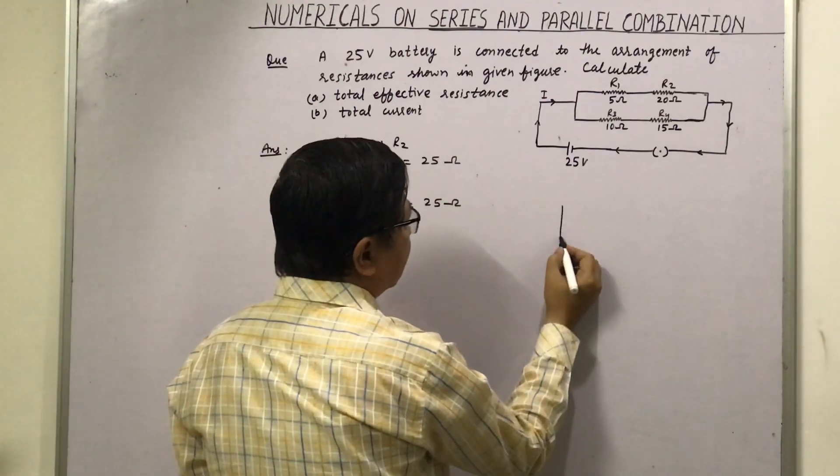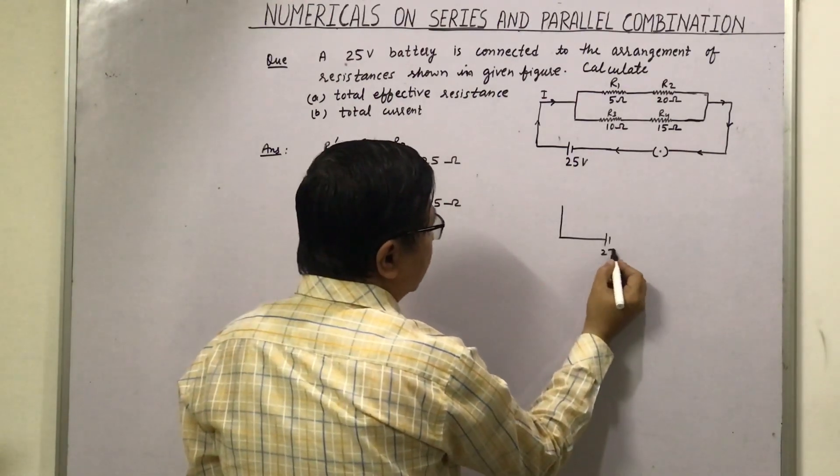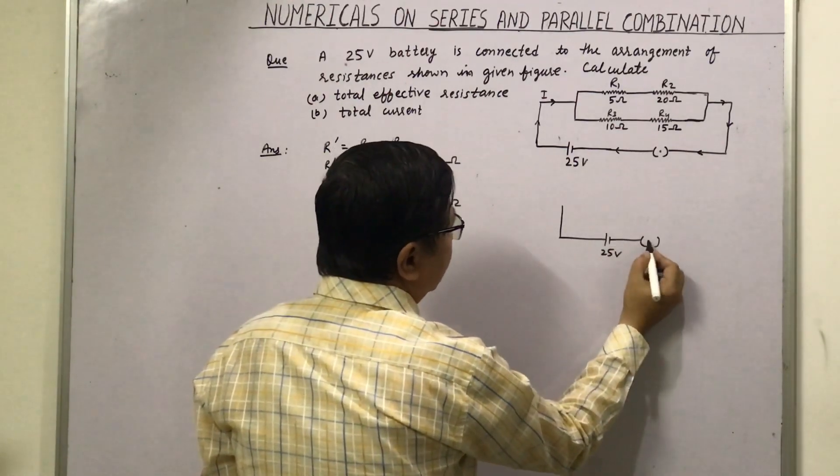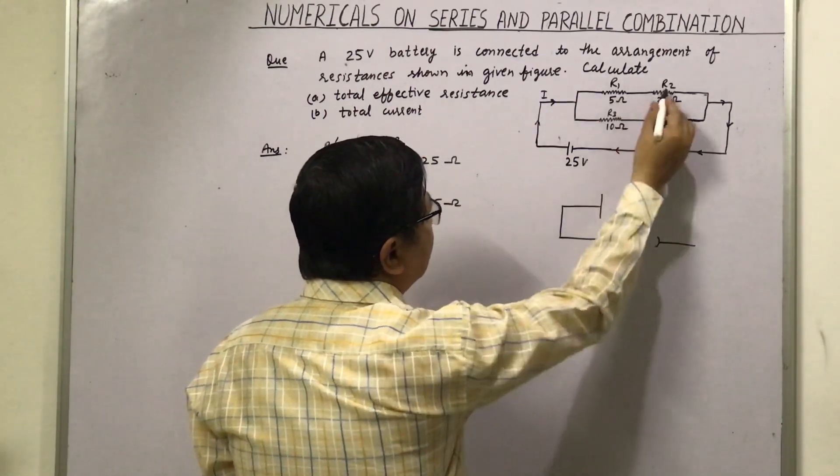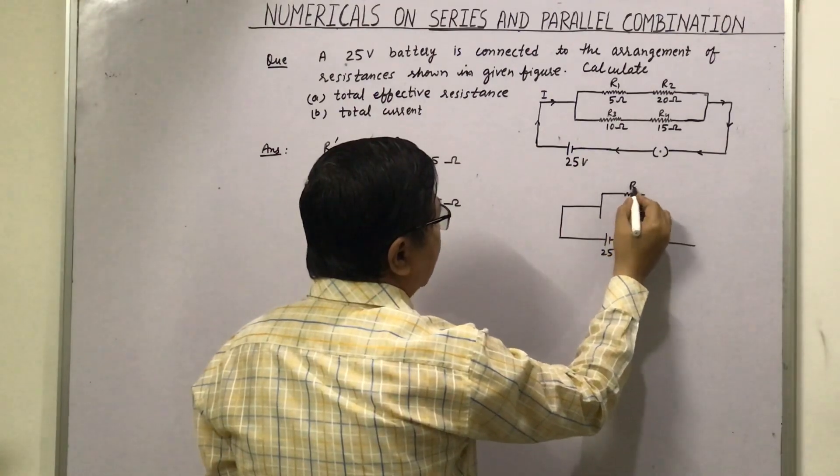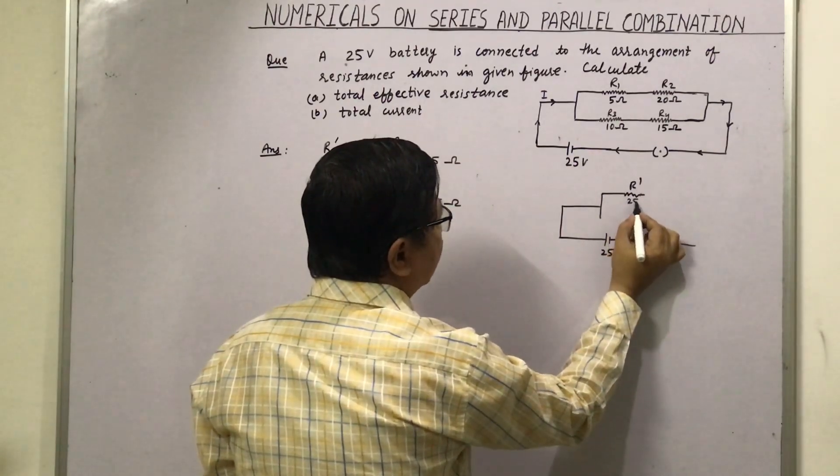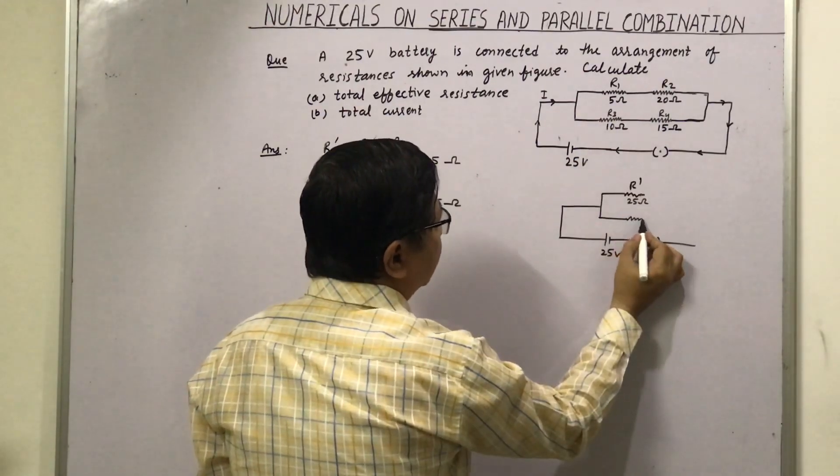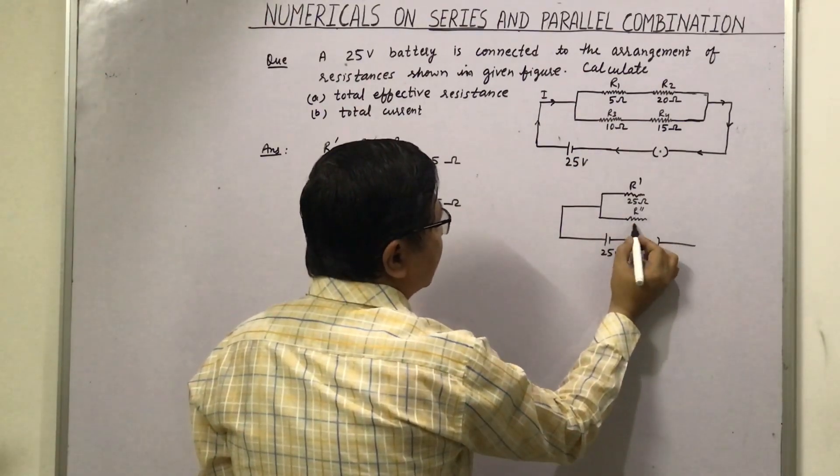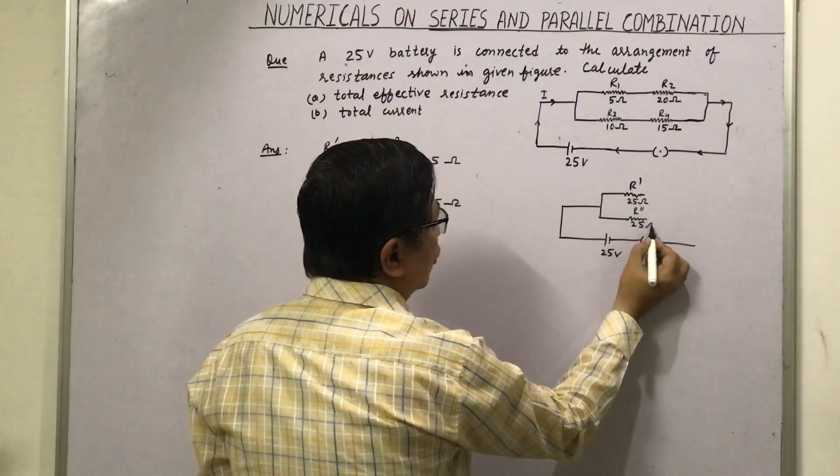Now we have the figure like this. This is 25 volts, and now R1 and R2 we have combined, and it is forming R dash which is equal to 25 ohm. And R3 and R4 again combined, that is R double dash, which is given by 25 ohm again.